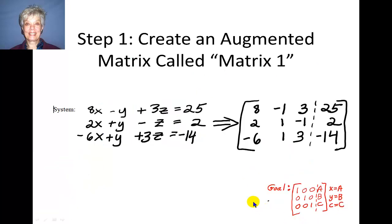Alright, let's talk a little bit about vocabulary. Here we have a system of three equations in three unknowns and an answer column. This is called a system and we're going to turn it into a matrix by using the coefficients of the variables and the answer column.